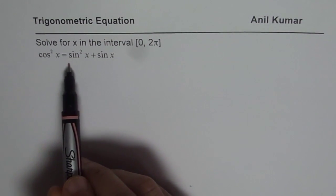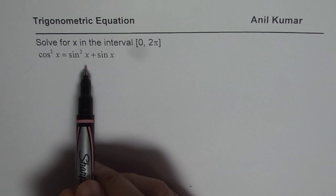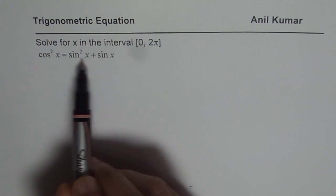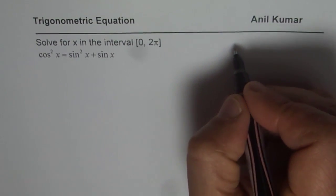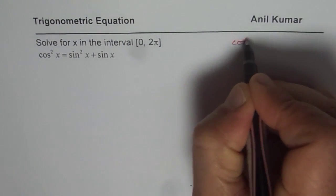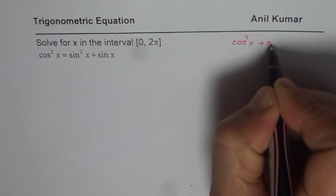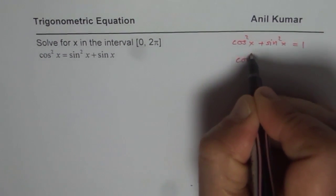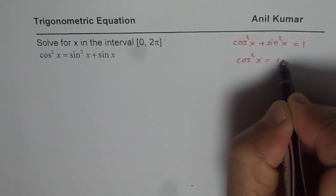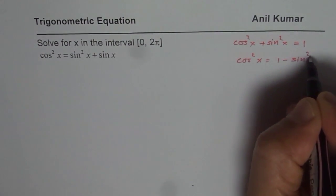cos²x = sin²x + sin x. So since we have sin x and sin²x, we could write cos²x in terms of sin. So we know that cos²x + sin²x = 1. So from here we can say cos²x = 1 - sin²x.